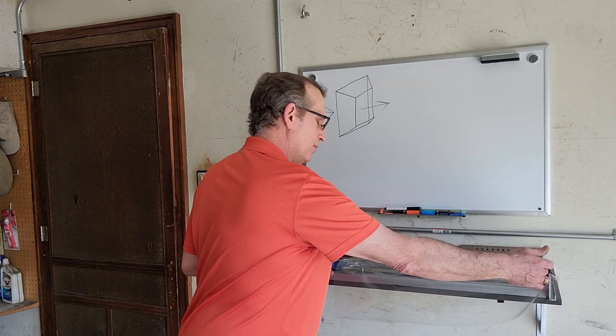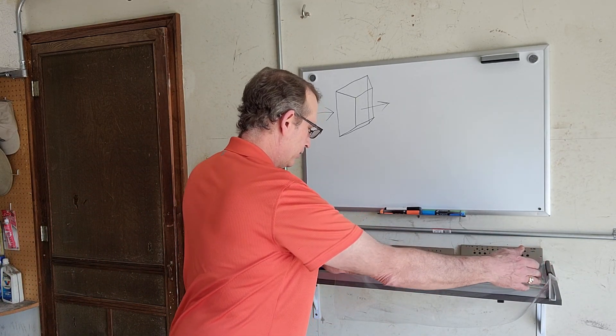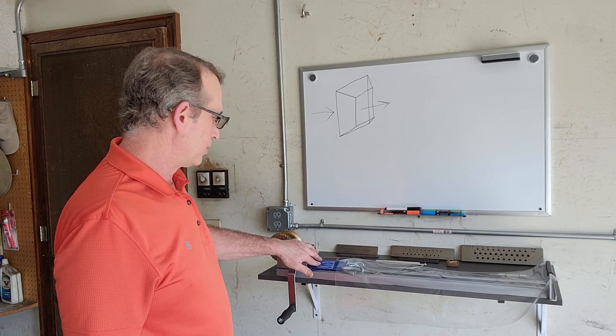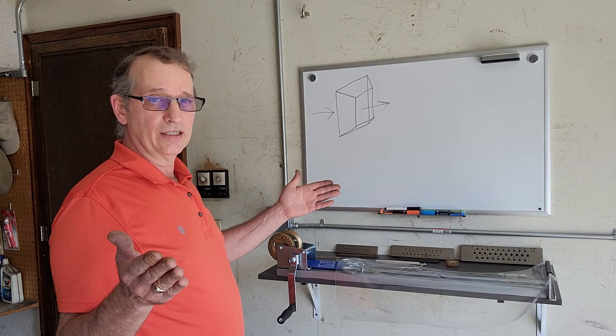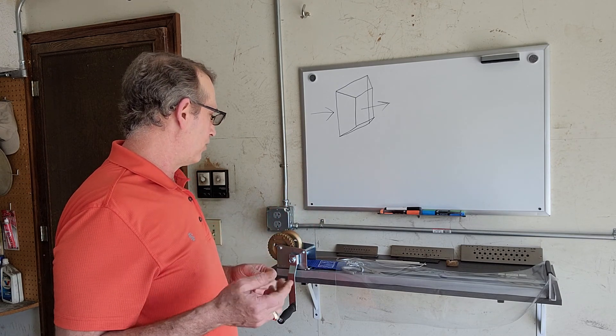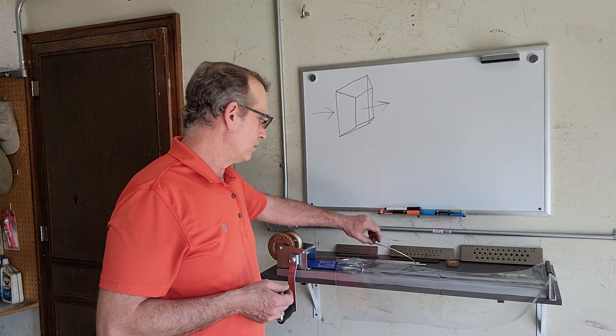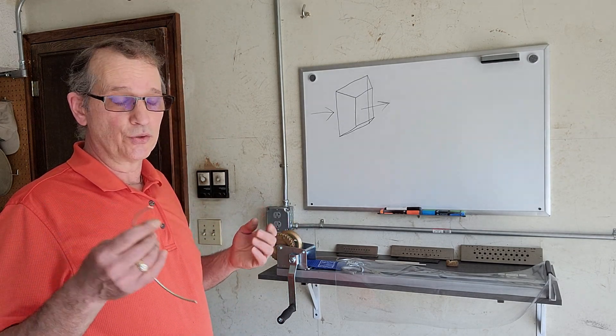The practical wire drawing length of this particular mill is 19 inches. That's from the face of the draw plate back here on the plate support to the end of the pliers once the pliers are fully withdrawn. So that means you can pull practically a 19 inch piece of wire.